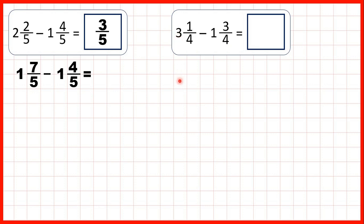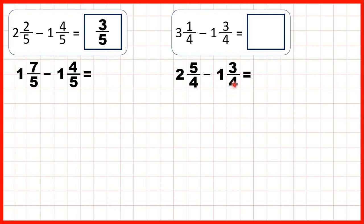1 less than 3 is 2, but that gives us 4 more quarters. So if we add the denominator to the numerator, 4 plus 1 is 5, so 2 and 5 quarters is the same as 3 and 1 quarter. But now we can subtract 1 and 3 quarters. So if we subtract the fraction part first, the denominator stays the same in our answer and 5 minus 3 is 2.